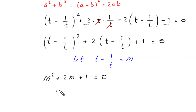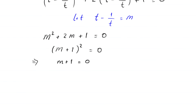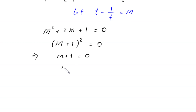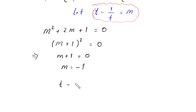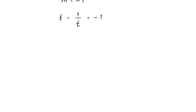This is a perfect square, so (m plus 1)² equals 0, which implies m plus 1 equals 0, giving m equals negative 1. Recalling that m equals t minus 1/t, we have t minus 1/t equals negative 1. Multiplying both sides by t gives t² minus 1 equals negative t, or t² plus t minus 1 equals 0.